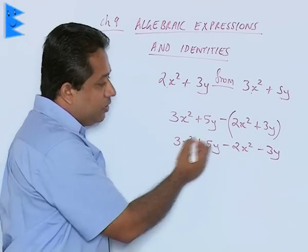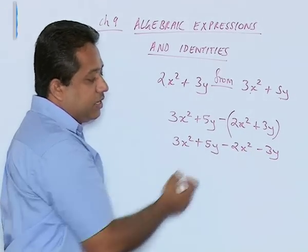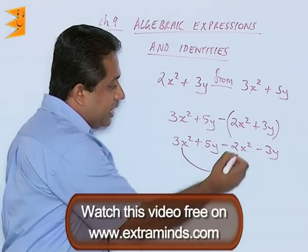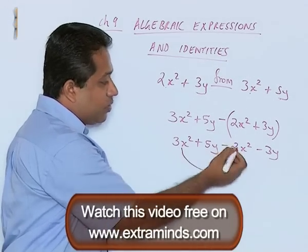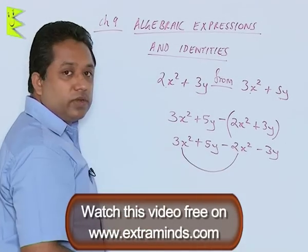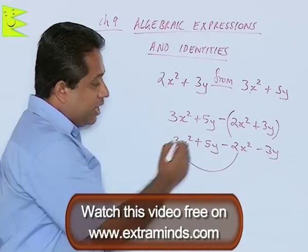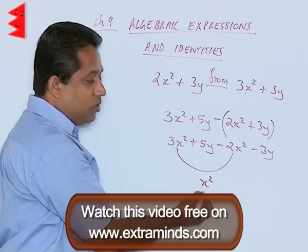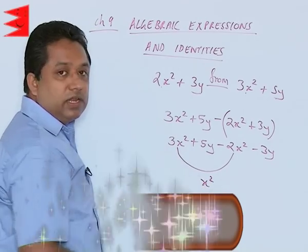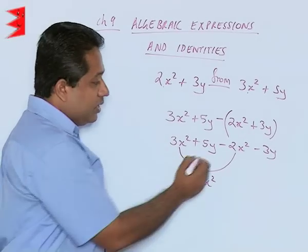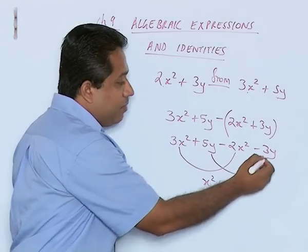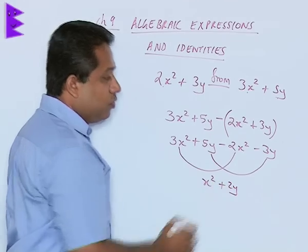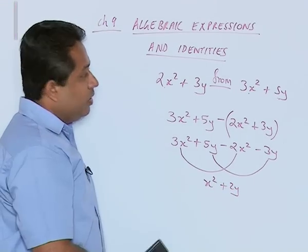After we open the brackets, we look for the like terms. Here we find the like terms: 3x square minus 2x square. So, 3x square minus 2x square, we will get 1x square, or simply we can write x square. And 5y minus 3y, we are going to get positive 2y.